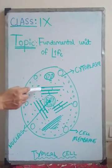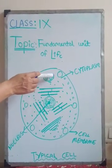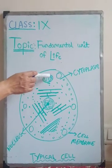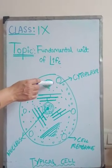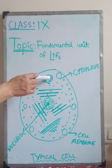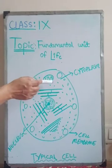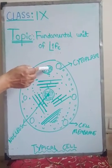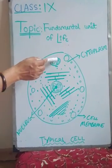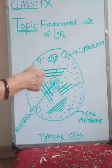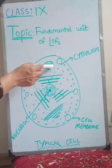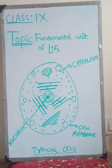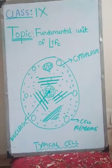Now we will be understanding the function of mitochondria. The function of mitochondria is to generate ATP — that is, it helps in the process of respiration which takes place inside the cell, and at that time it generates ATP. So that is why it is known as the powerhouse of the cell.